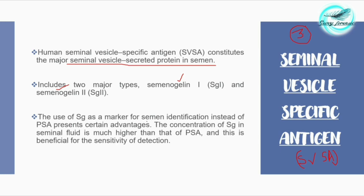The use of semenogelin (SG) as a marker for semen identification instead of PSA represents certain advantages. The concentration of semenogelin in seminal fluid is much higher than that of PSA, which is beneficial for the sensitivity of detection, making it more effective than prostate specific antigen for identification purposes.